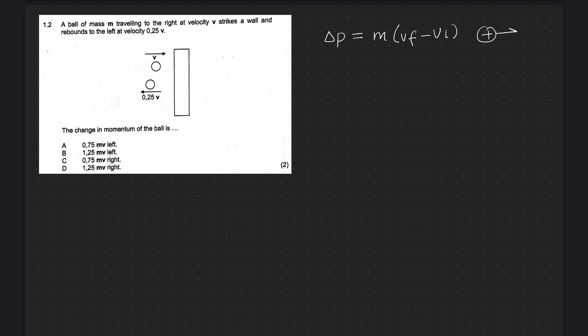So I'm going to choose the right as positive. So it's going to be M, open bracket. The final velocity is to the left, so it's going to be minus 0.25V. And then minus the initial velocity, so minus V. That's going to be M multiplied by minus 1.25V. Now we can simplify. That's going to be minus 1.25MV.